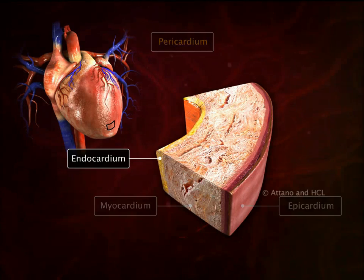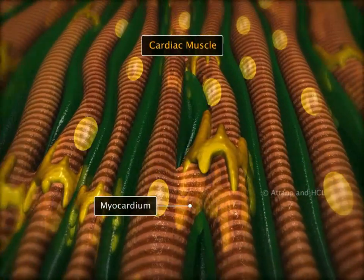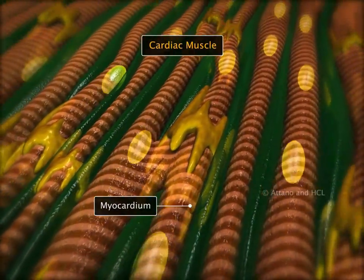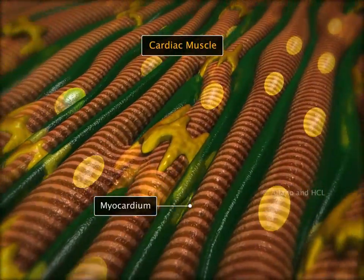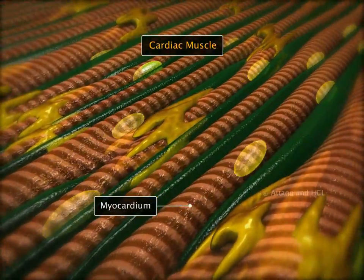The myocardium, the muscular layer, is made up of involuntary striated cardiac muscle fibers found only in the heart.